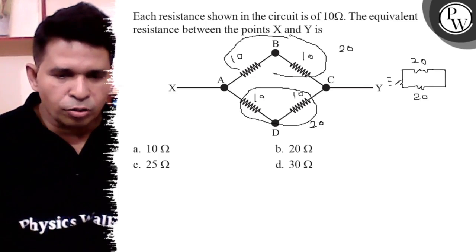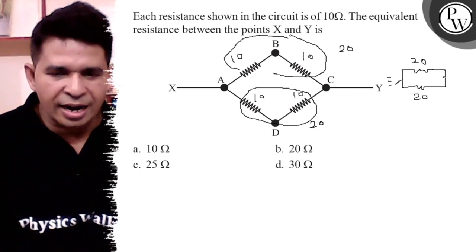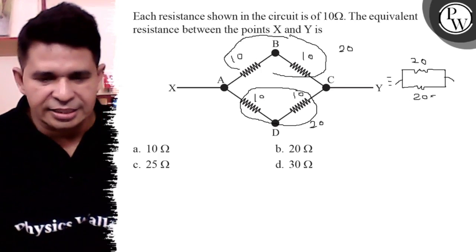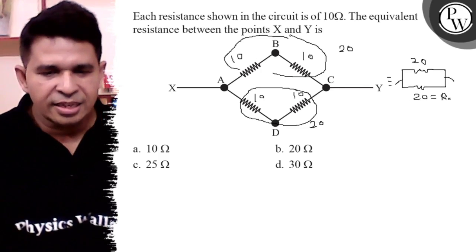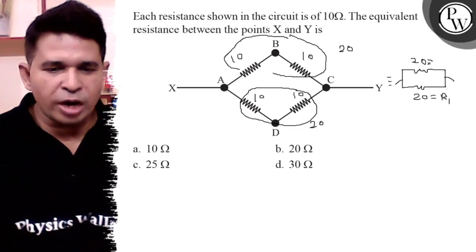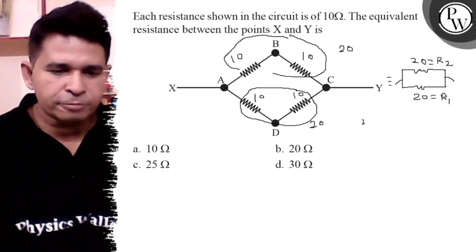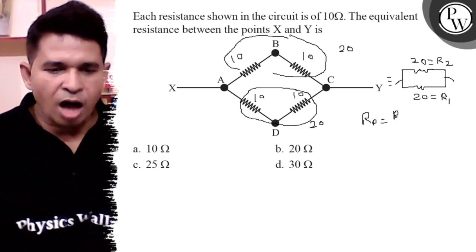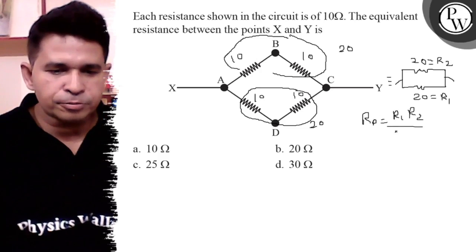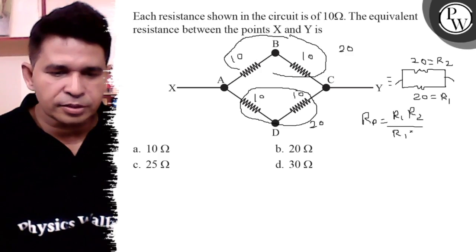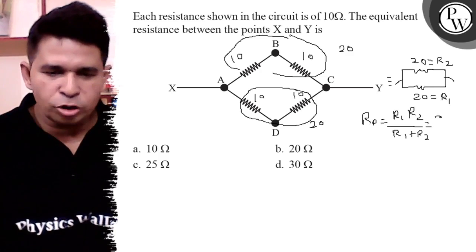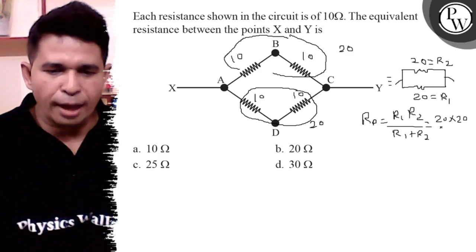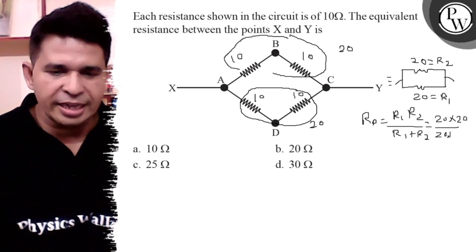So, in parallel, what is the equivalent resistance? The formula is R1 times R2 upon R1 plus R2. Put 20 into 20 upon 20 plus 20.